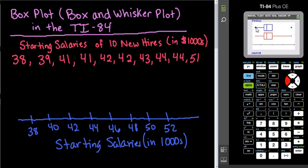What I can do is I can go over and I can find what those values are. So the minimum was at 38. So I can go ahead and put the dot at 38.